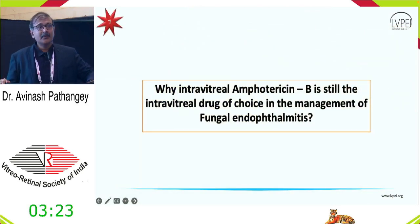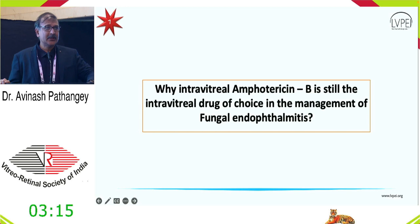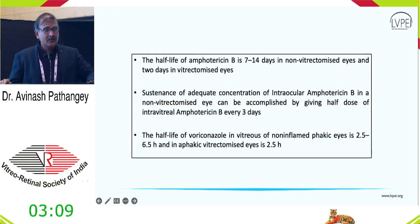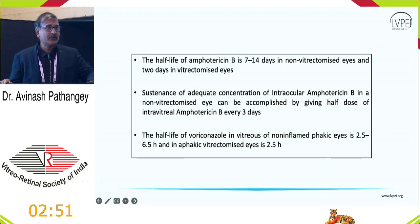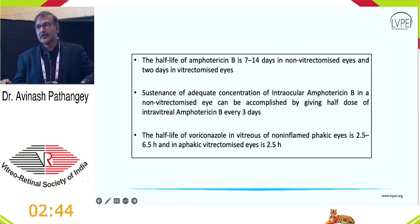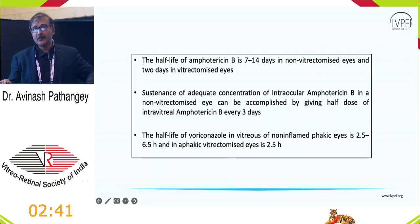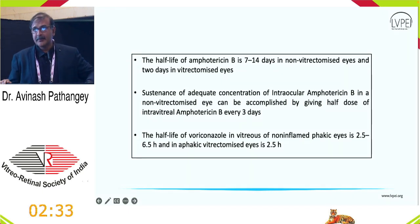What antifungals are available? Is the age-old amphotericin B still good enough, or does voriconazole pose a challenge? One must understand the pharmacokinetics. Voriconazole has a very short half-life — in vitrectomized eyes, just about two and a half hours, similar to fluoroquinolones. To sustain its concentration, it would need to be injected even twice a day to be efficacious. Therefore, amphotericin B still holds good in fungal endophthalmitis management, lasting 7 to 14 days in non-vitrectomized eyes when 5 micrograms is injected.